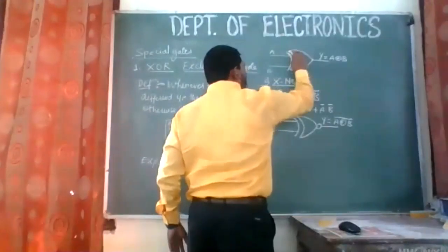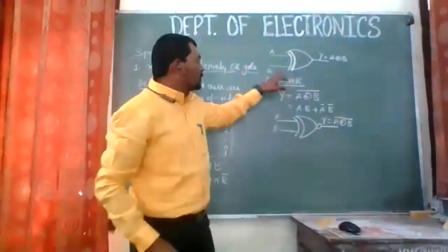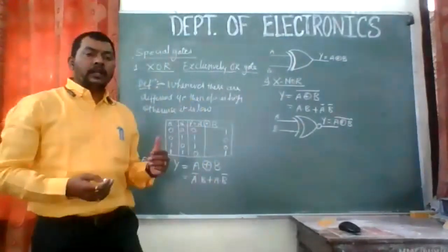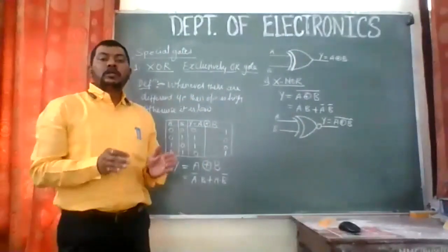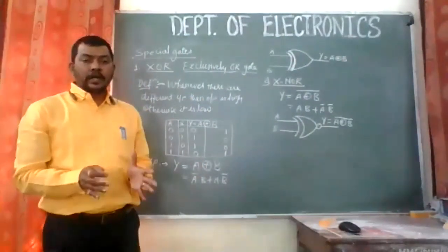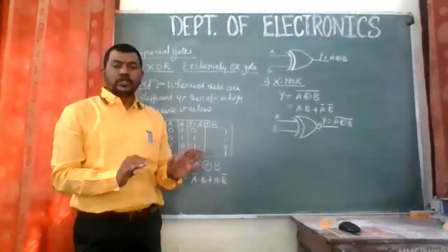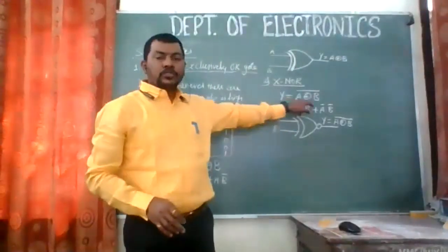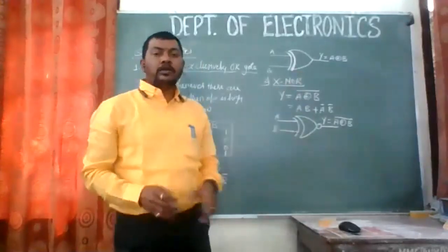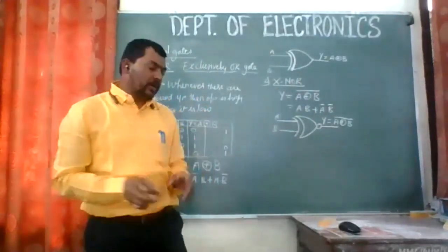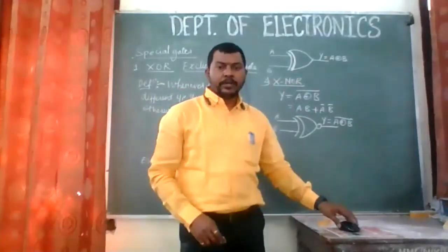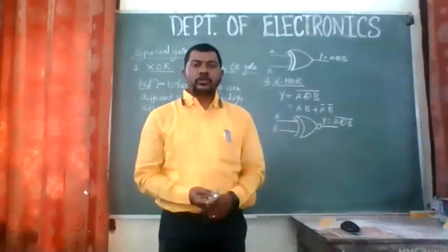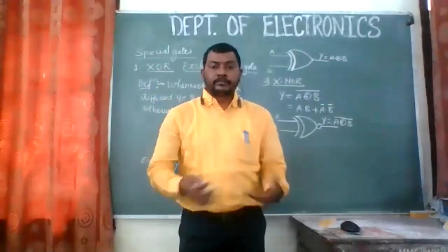For XNOR gate, it is the complement of XOR gate. The definition: whenever there are different inputs, the output is low; otherwise it is high. The truth table is the complement of XOR. The equation is Y = (A XOR B)̄ = A·B + A̅·B̅. We will complete this, and if you have any questions you can ask, and then we will move on to the next topic.